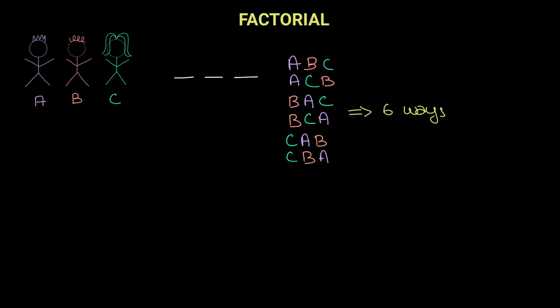Let's look at it a different way. We have three possibilities for the first position — we can either put an A, a B, or a C. Once we have selected someone for the first position, we are left with two possibilities for the second position. So if we choose A, we are left with B and C; if we choose B, we are left with A and C; or if we select C, we are left with A or B in the second position. Then for the last position, once we have chosen someone for the first two positions, we are left with one possibility. Multiplying three into two into one gives you six.